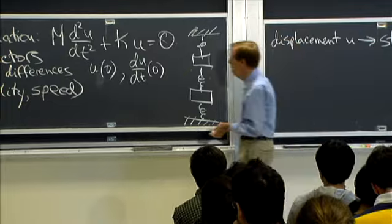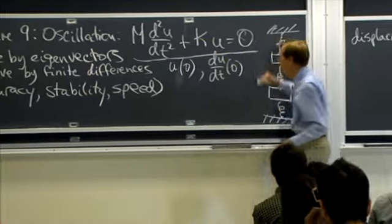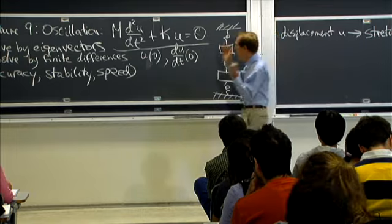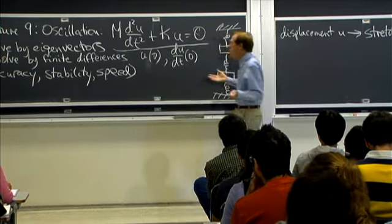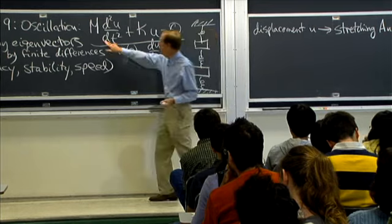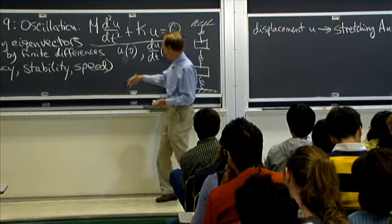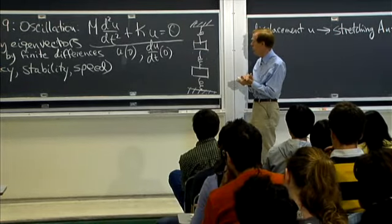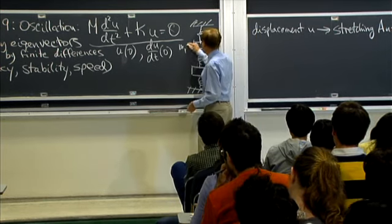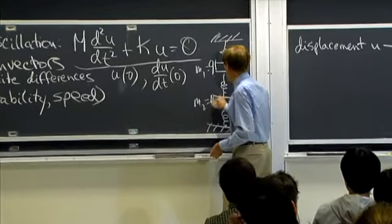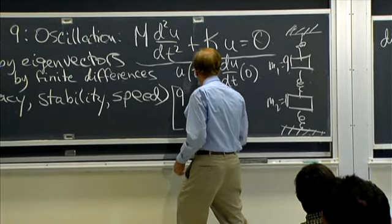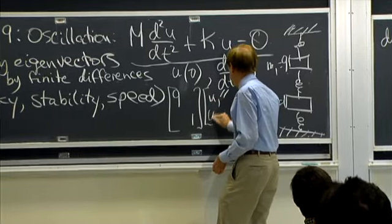I hope you've seen that equation, because I think of it as the fundamental equation of mechanics — the fundamental equation of mechanical engineering. It's Newton's law for a system. The matrix M has several masses; in this case it would be a two-by-two system. Suppose mass one is nine and mass two is one, so we'd have a nine and a one multiplying u1'' and u2''.